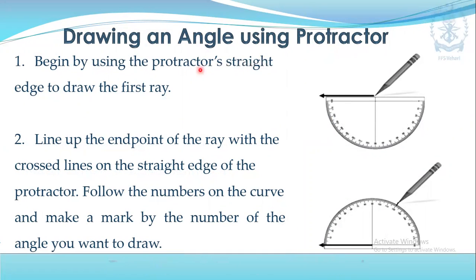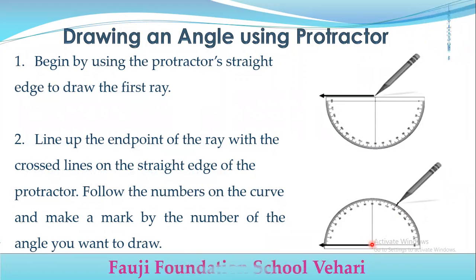Drawing an angle using the protractor. Begin by using the protractor's straight edge to draw the first ray — a straight line. Line up the end point of the ray with the cross line on the straight edge of the protractor, and make a mark at the number of the angle you want to draw. Let's suppose you had to draw an angle of 120 degrees. You set the protractor on the line so that the center point reads 0.